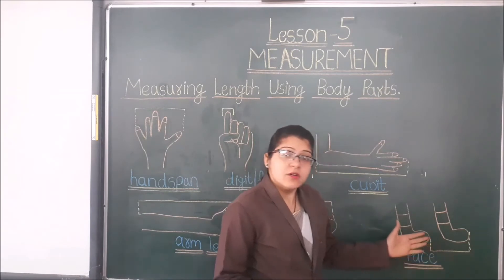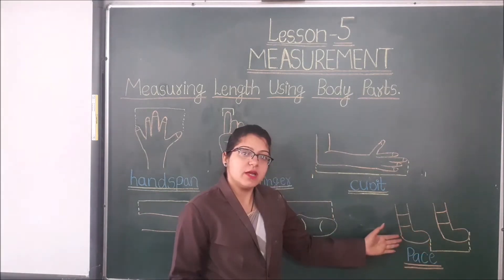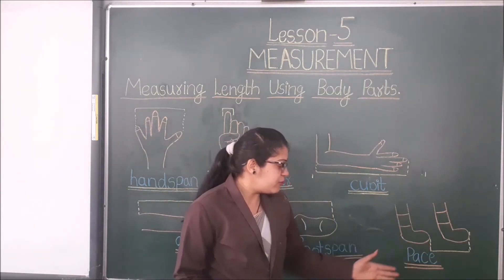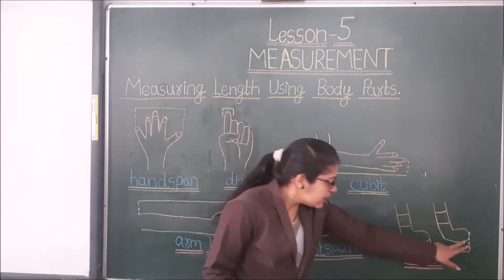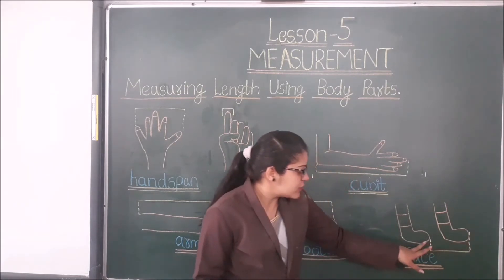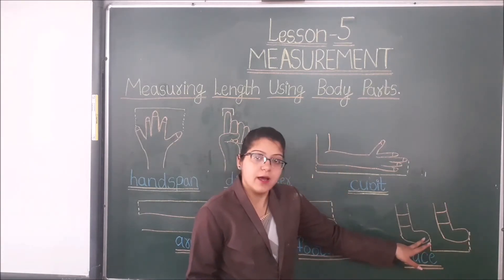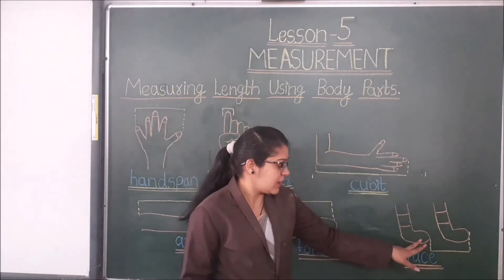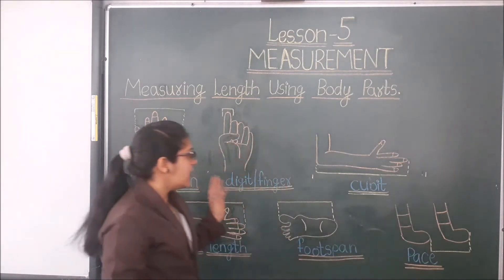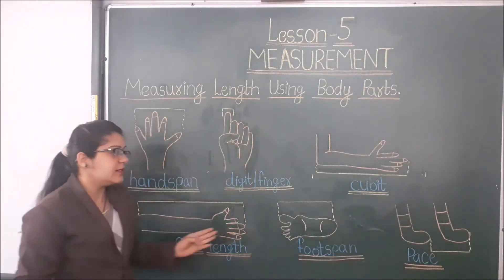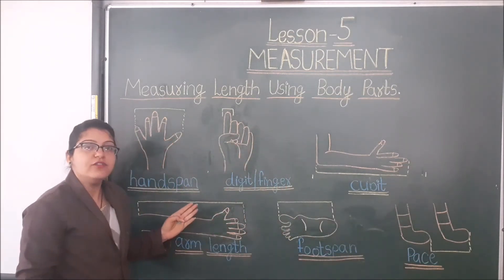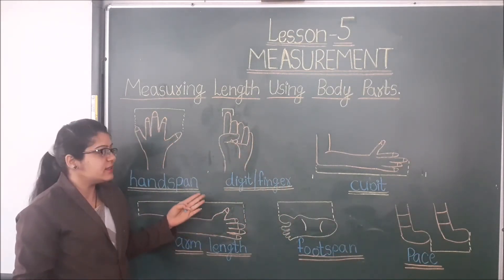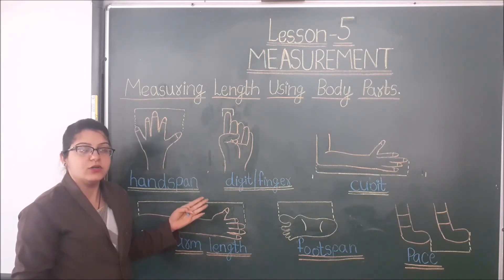The next is pace. Students, we can measure the length with the help of pace — the distance between one foot and the other. These are the non-standard units of measurement, or we can say these are rough measurements.